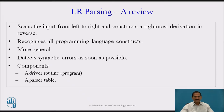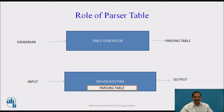LR parsing consists of scanning the input from left to right and constructing the rightmost derivation in reverse. Recognizing all programming language constructs is one of the aspects of an LR parser. It is more general in nature and detects syntactic errors as soon as possible. It has two components: a driver routine which is a program, and a parsing table which is used by that program.